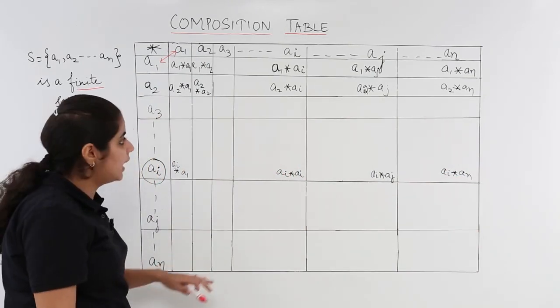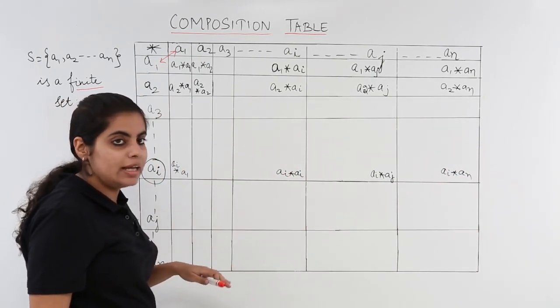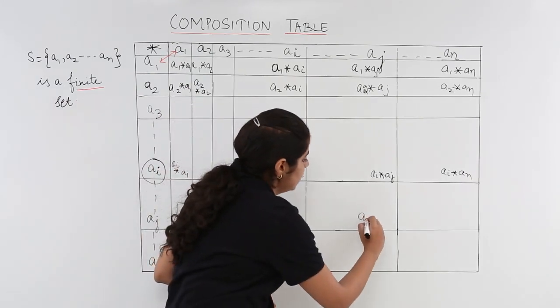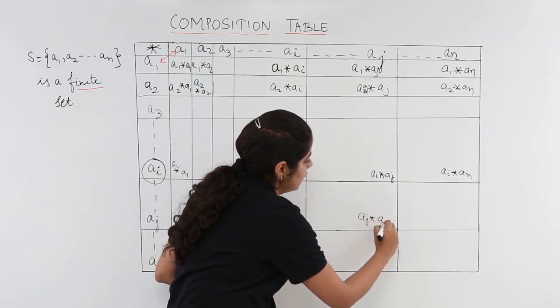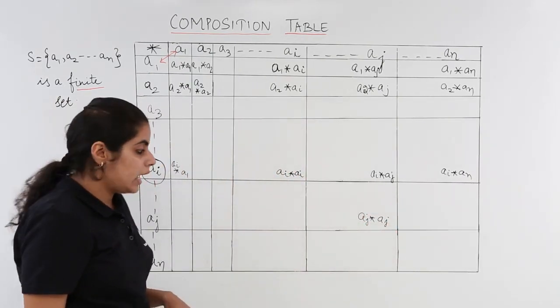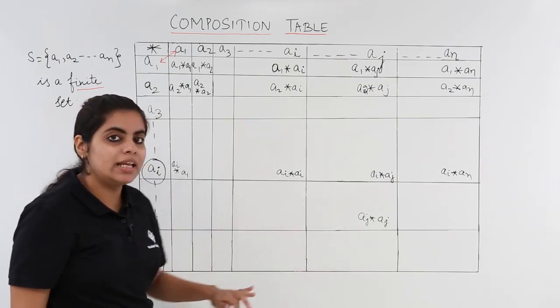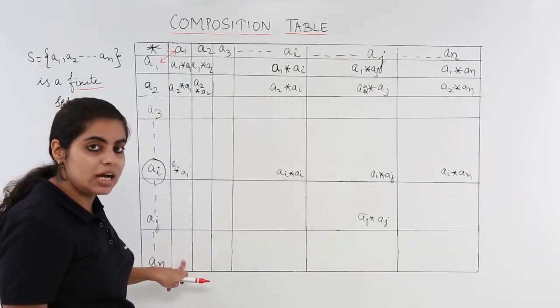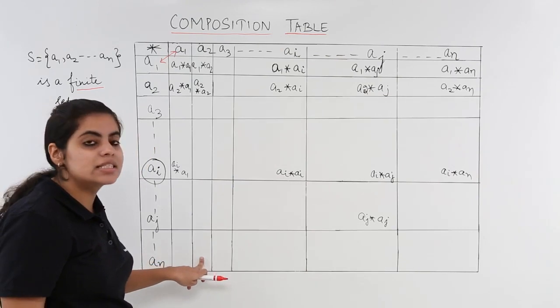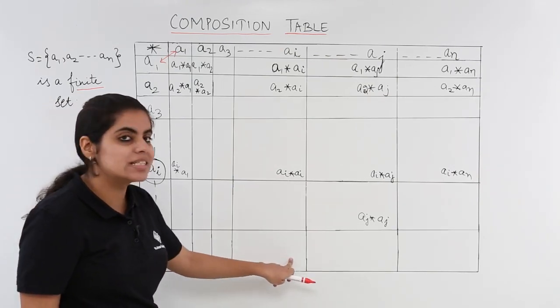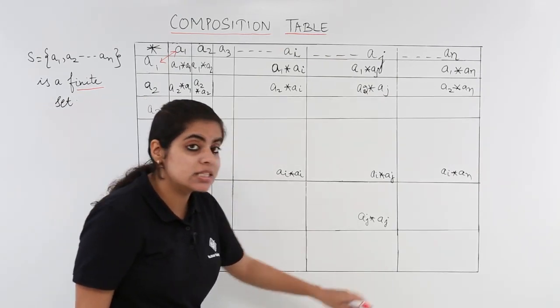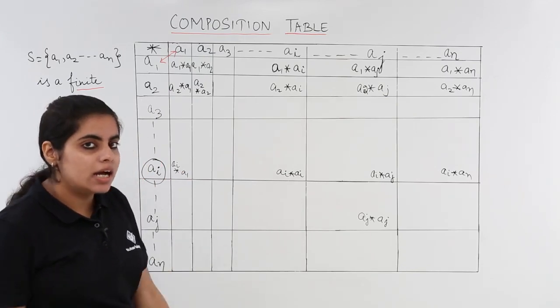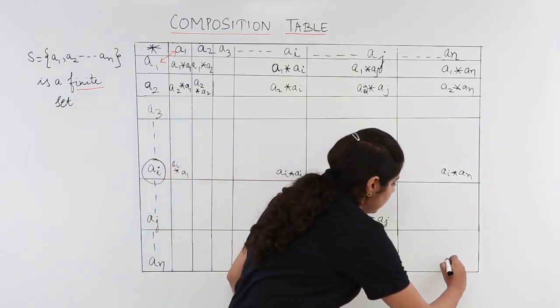I will have aj star a1, aj star ai. Here I would be getting aj star aj. And similarly for an, I would be having an star a1, an star a2, an star ai, an star aj, and in the last an star an.